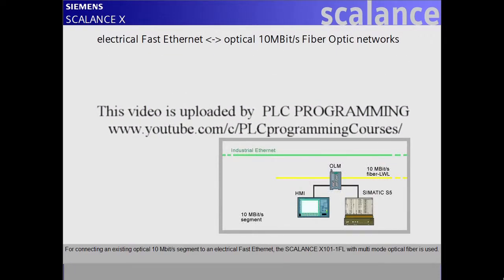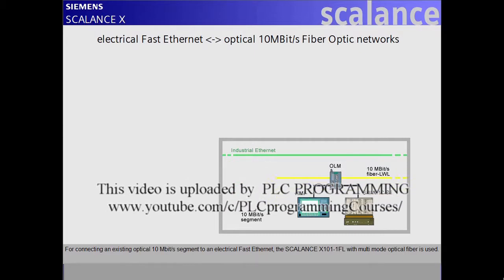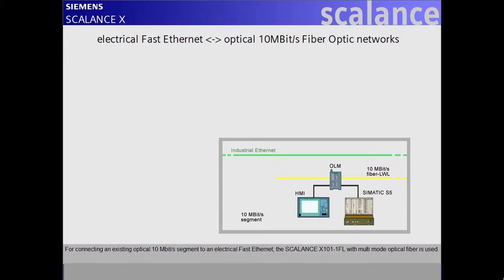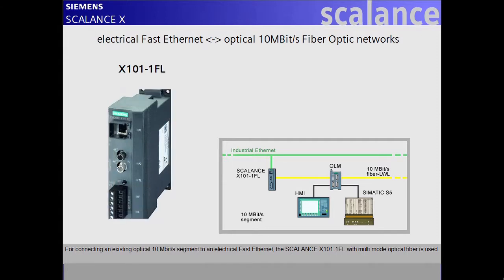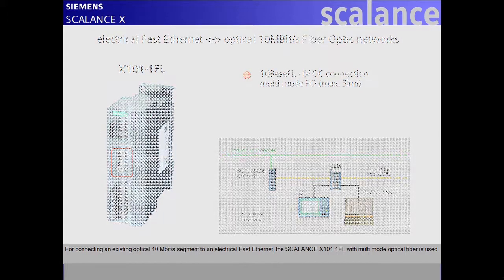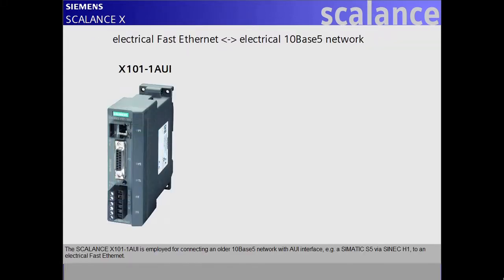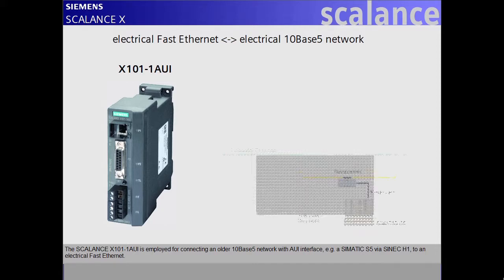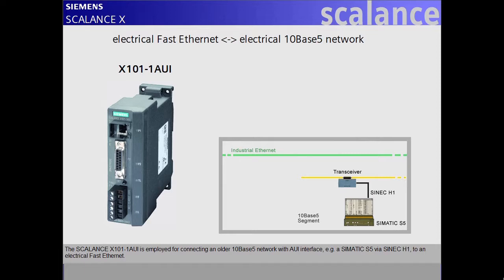For connecting an existing optical 10 Mbit per second segment to an electrical fast Ethernet, the Scalance X101-1FL with multimode optical fiber is used. The Scalance X101-1AUI is employed for connecting an older 10Base5 network with AUI interface, for example a C-Matic S5 via C-NEC H1 to an electrical fast Ethernet.